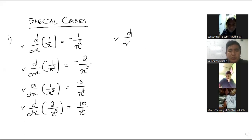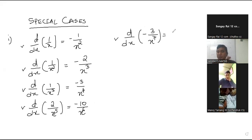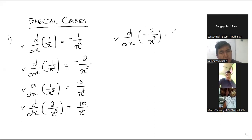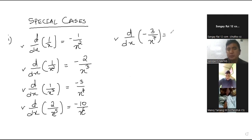d by dx of negative three divided by x to the power seven — without solving, you have to tell me directly. We already have a negative here; when you differentiate this function you will get one more negative. That negative and this negative become positive. Seven will multiply with three, so it becomes 21 divided by x to the power eight.